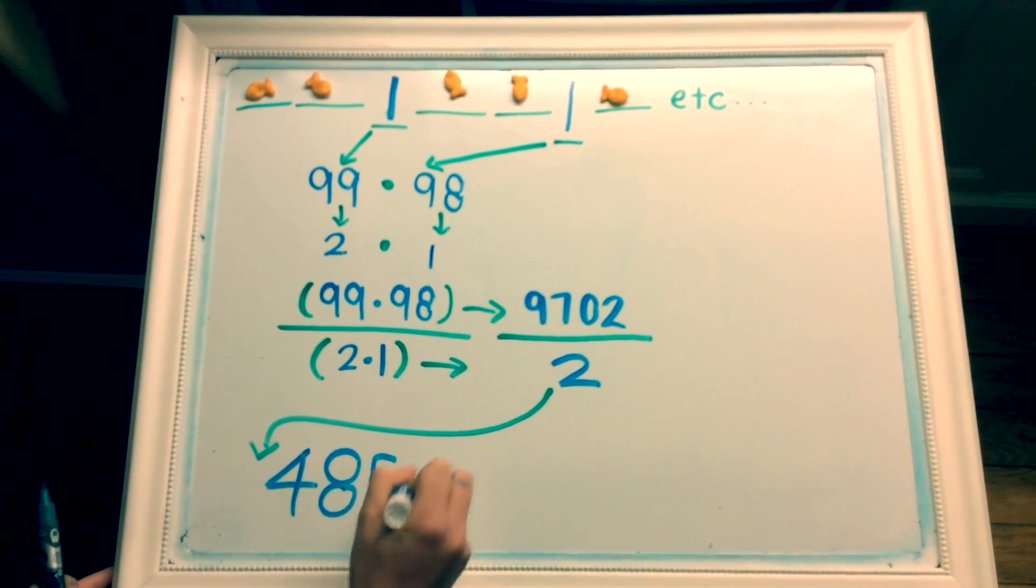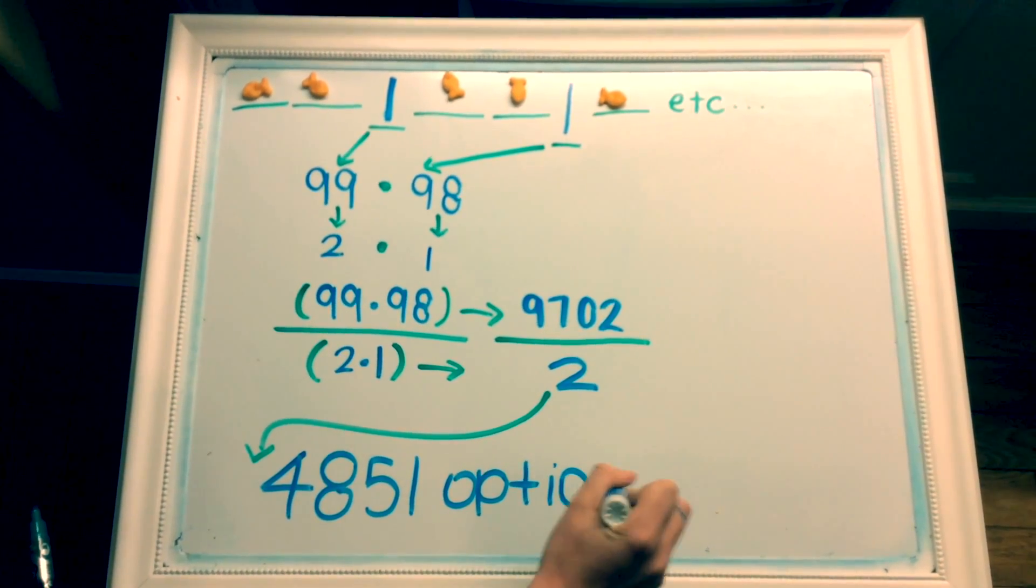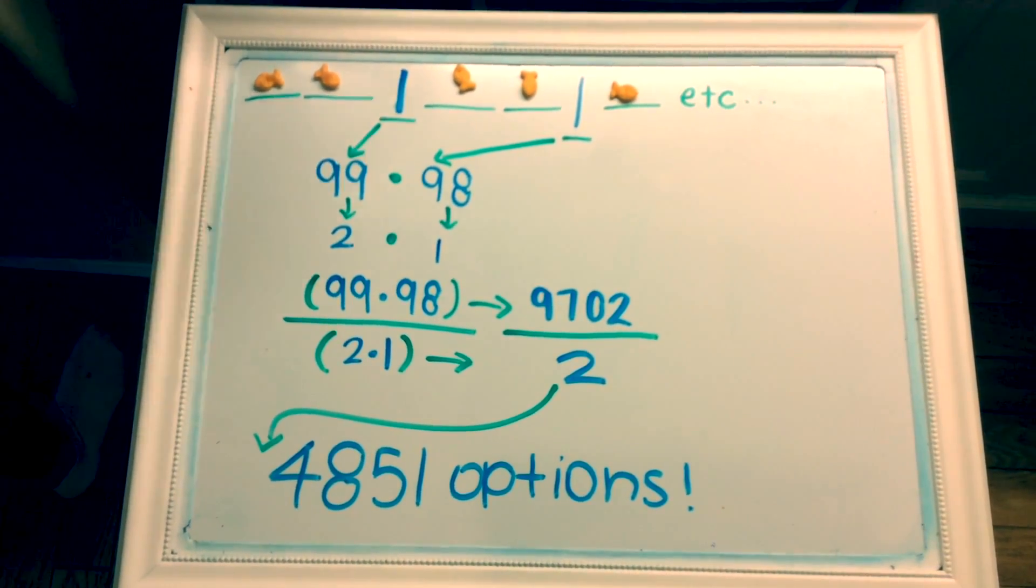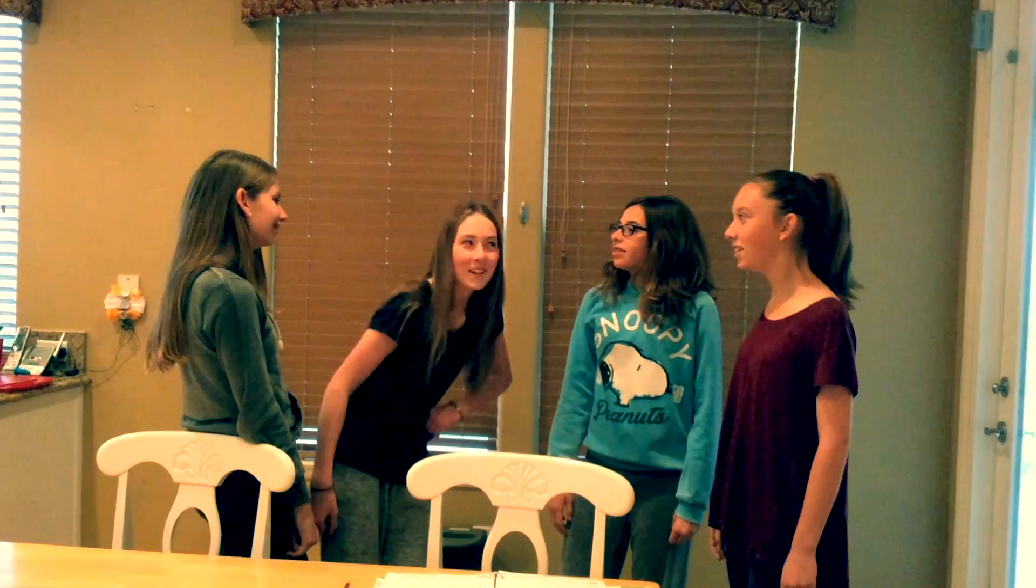Since there are 4,851 ways to put the bars, there are also 4,851 ways to put the fish since the bars are grouping them together. There's your final answer! I totally see how to solve it now. Me too! We have officially got it!